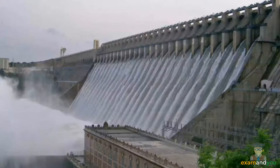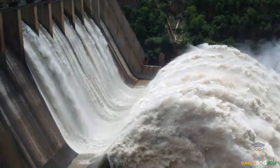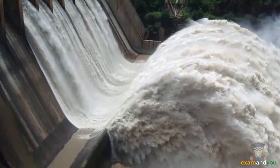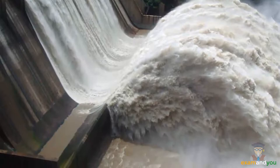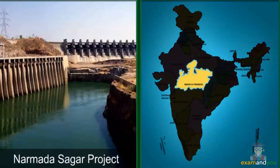Large infrastructure projects have also resulted in massive deforestation. Over 5,000 square kilometers of forests have been cleared since 1951 for multipurpose river projects. The Narmada Sagar project in Madhya Pradesh alone will submerge 40,000 hectares of natural forests.